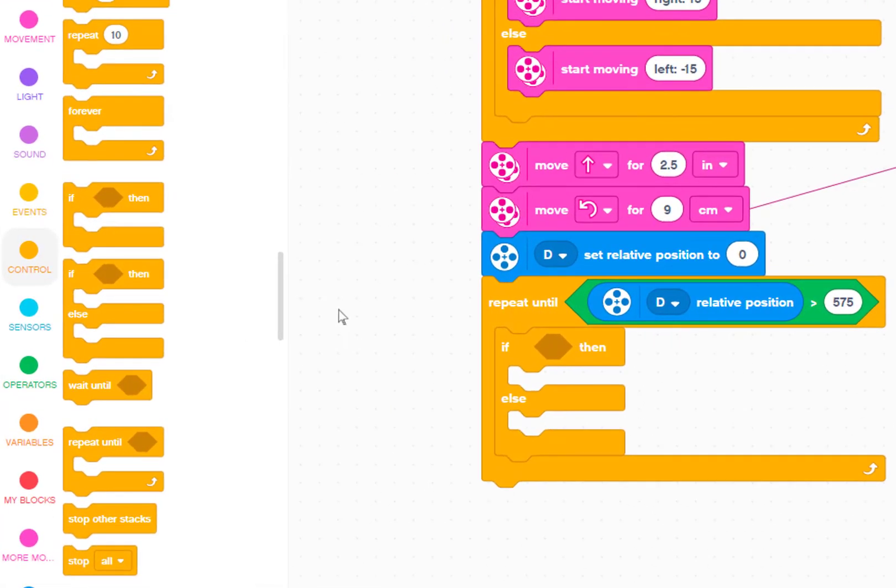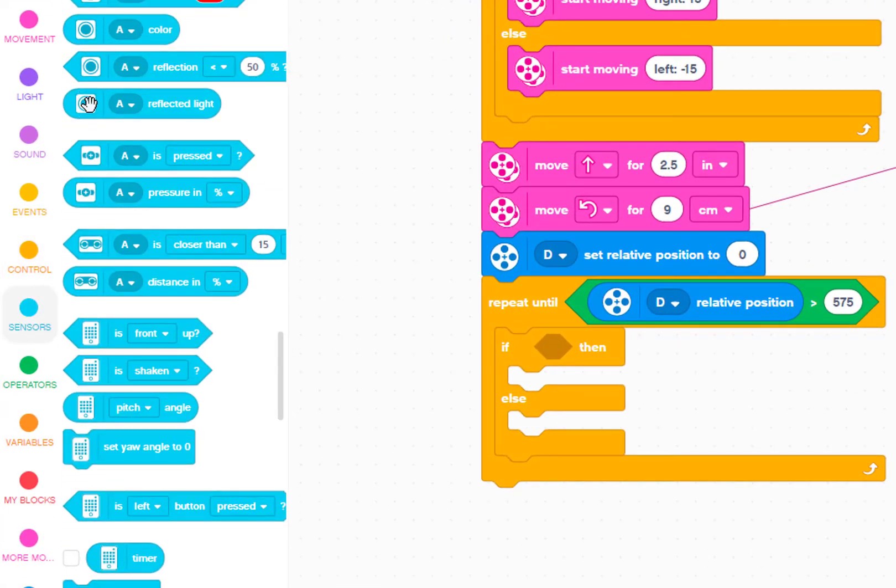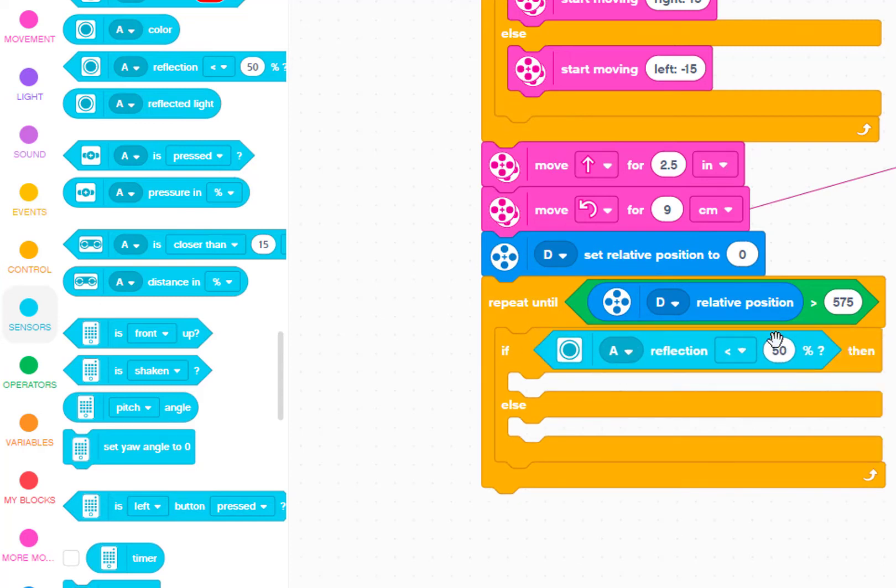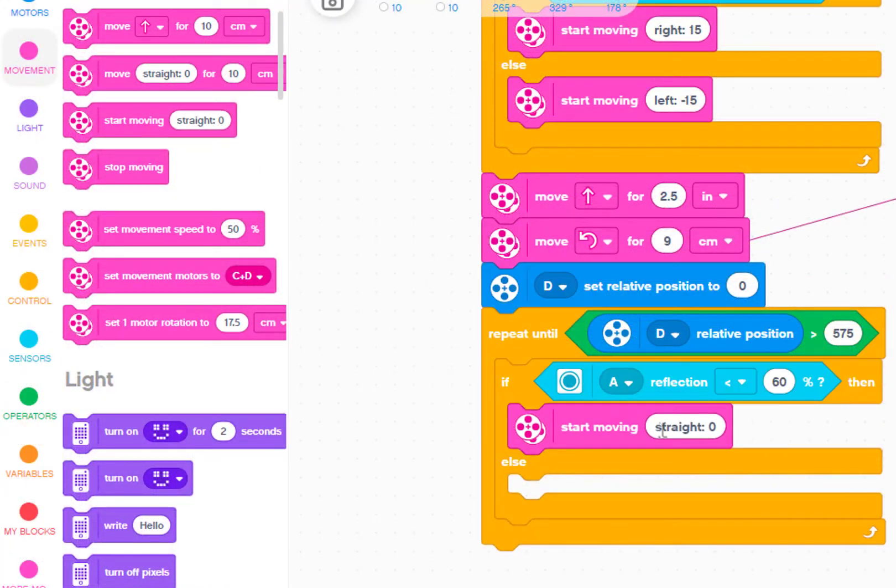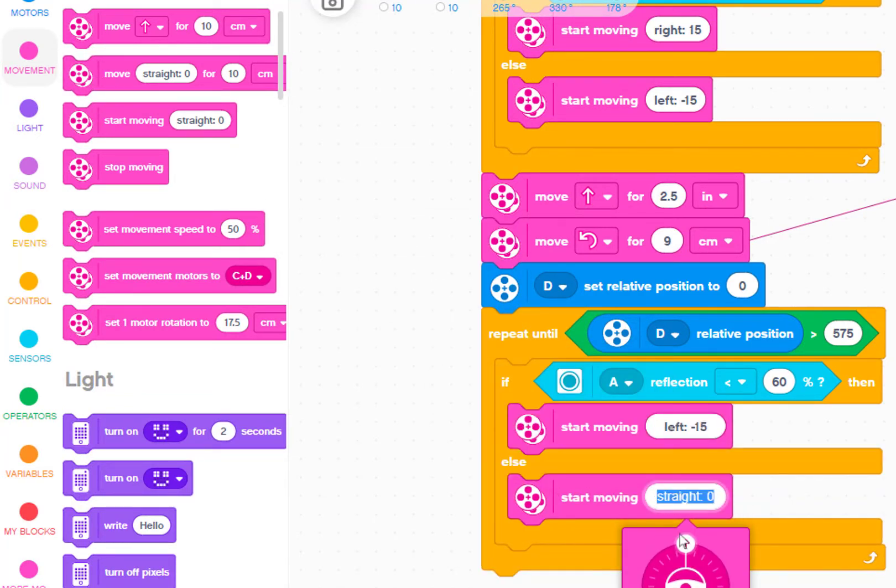This time we'll be using the color sensor on the left side so port A is correct. Because Chariot will be following the left edge of the road, the then part should turn slightly left to get back to the left edge of the road. The else part should move slightly right to get back to the edge of the road.